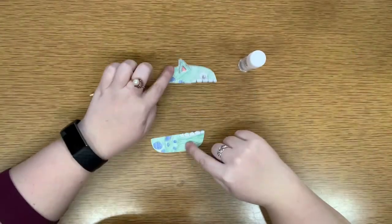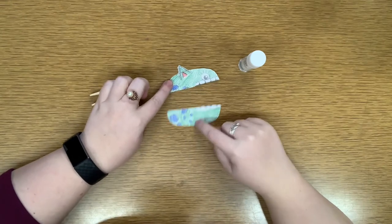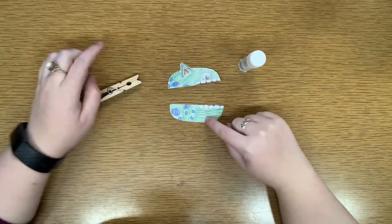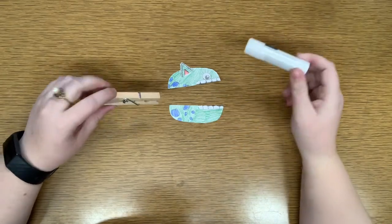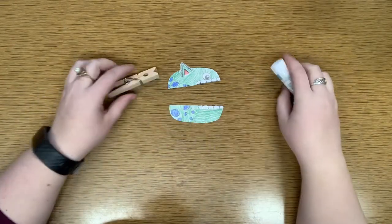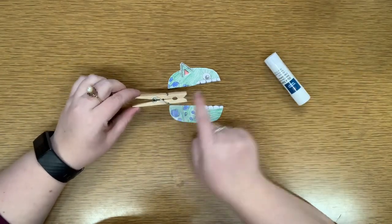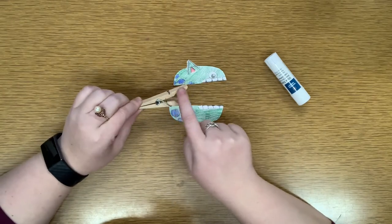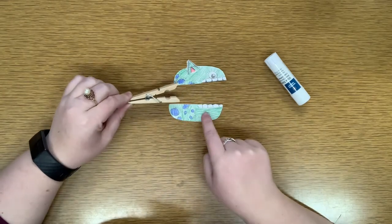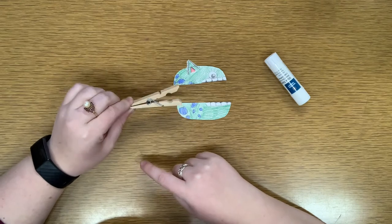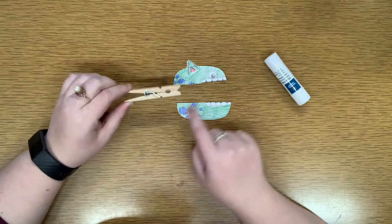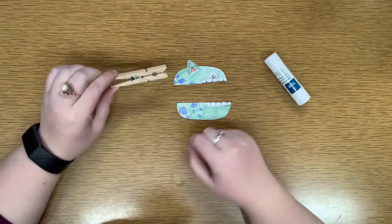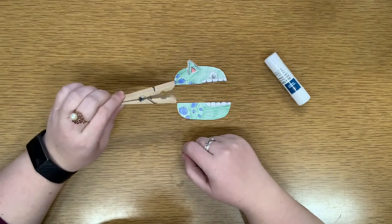Okay, now that we've got our two pieces of our clothespin puppet cut out, we're going to use our clothespin. And I'm going to use this glue stick to glue it onto the clothespin. So, what's going to happen is we're going to glue the top part onto the top part of this clothespin here. And the bottom part of the face onto the bottom part so that when we open and close the clothespin, it's like this critter is opening and closing its mouth.